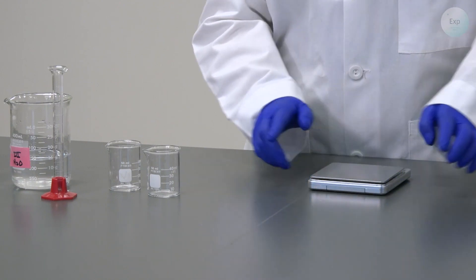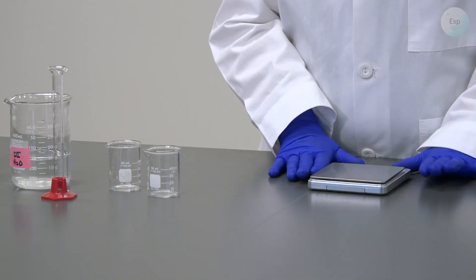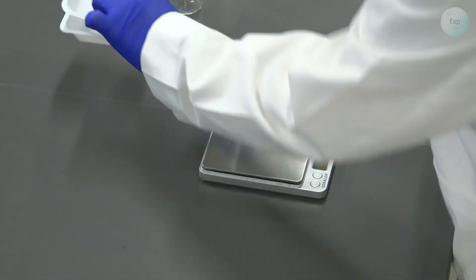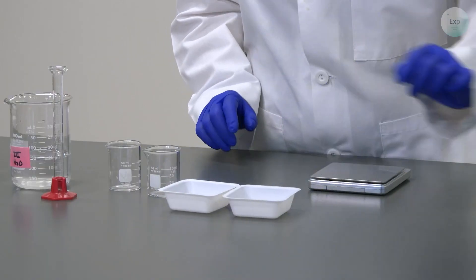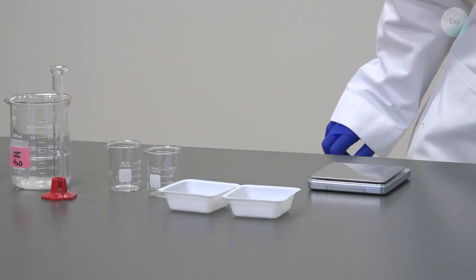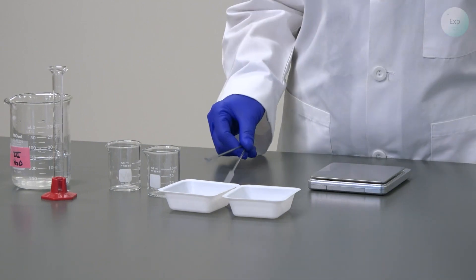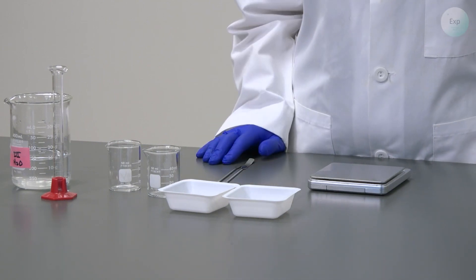To add the right amount of sodium carbonate and calcium chloride we will need a scale. For our two solids we will use two weighing boats, and for the two solids I'm going to use two spatulas to measure them out.